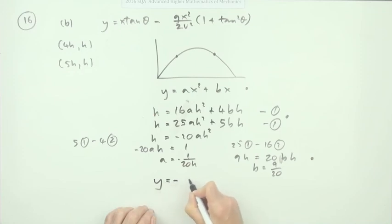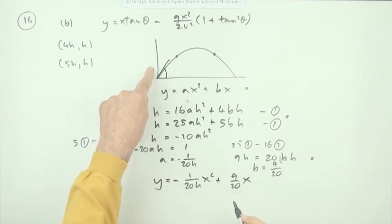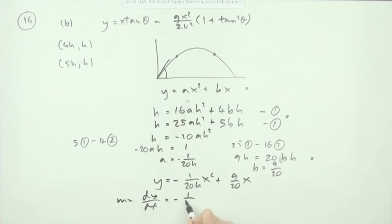Now you've got the equation y equals negative 1 upon 20h x squared plus 9 upon 20 x. Then you can find the angle at the start by differentiating and putting x equals zero. The gradient dy by dx is negative 1 over 10h times x plus 9/20. When x is zero that term disappears and you've got the gradient equals 9 upon 20, so tan theta is 9 upon 20. Theta is as before 24.2 degrees.